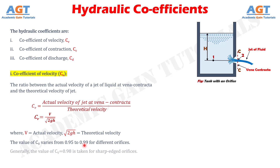Generally, the value of CV equals to 0.98 is taken for sharp-edged orifices.